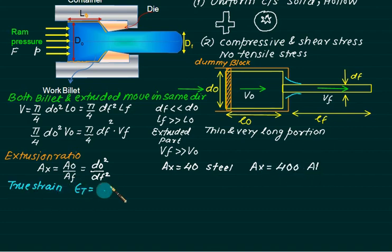The true strain is defined as epsilon T equals ln. This time we are interested in area reduction, so it is defined as A0 by AF, same as ln of D0 square divided by DF square. We can take out 2 common: ln of D0 divided by DF.